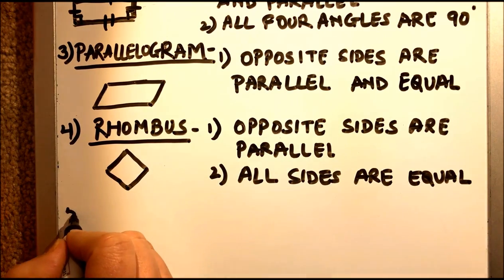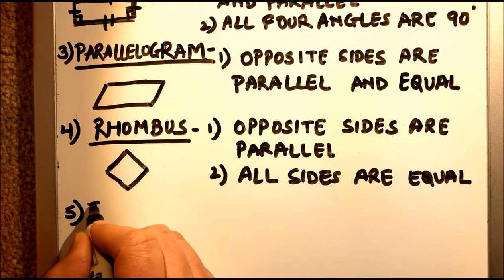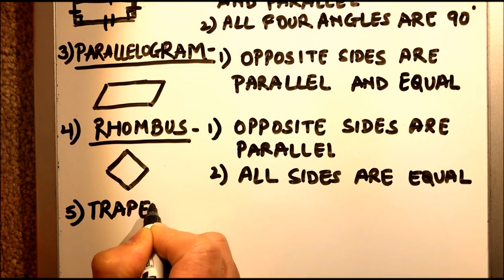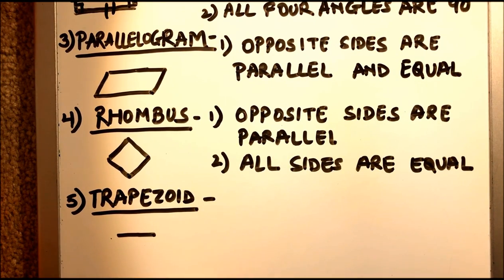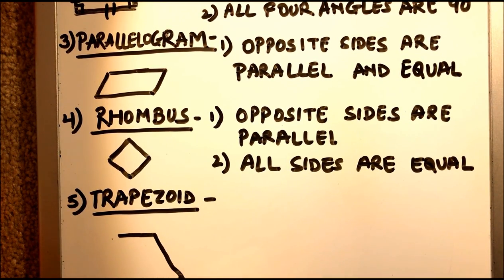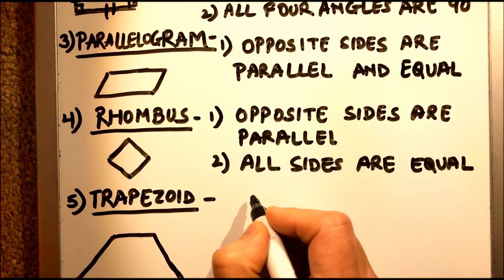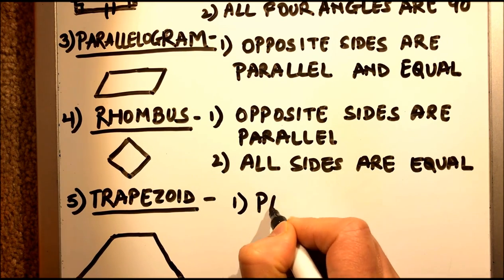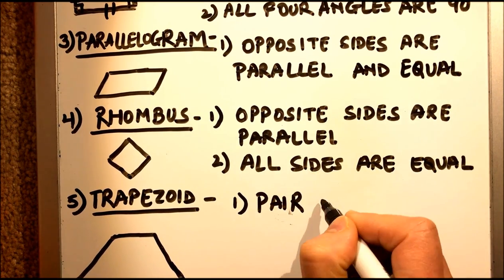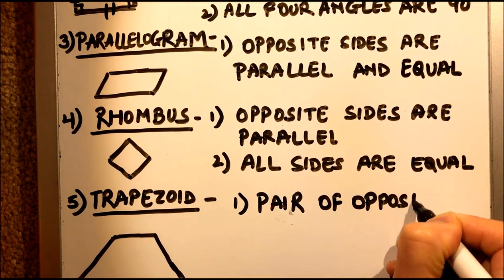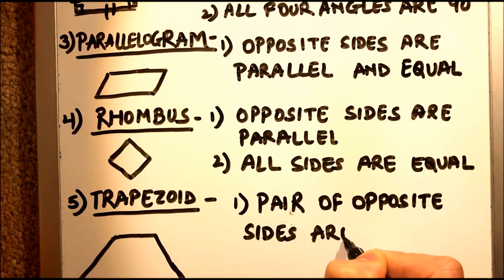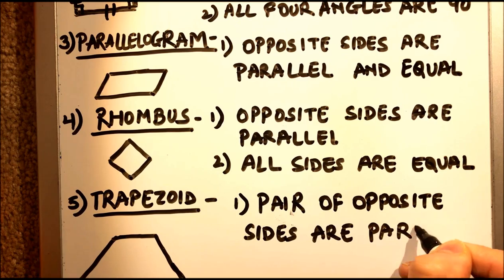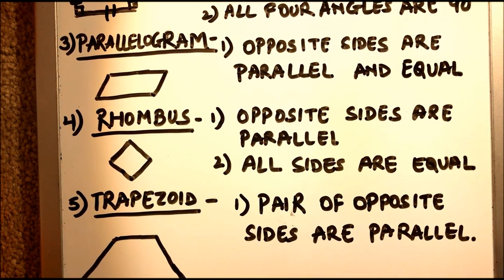Next comes the fifth quadrilateral, which is a trapezoid. A trapezoid is a figure in which only one pair of opposite sides are parallel and the remaining two sides are of unequal length — all sides are of different length.